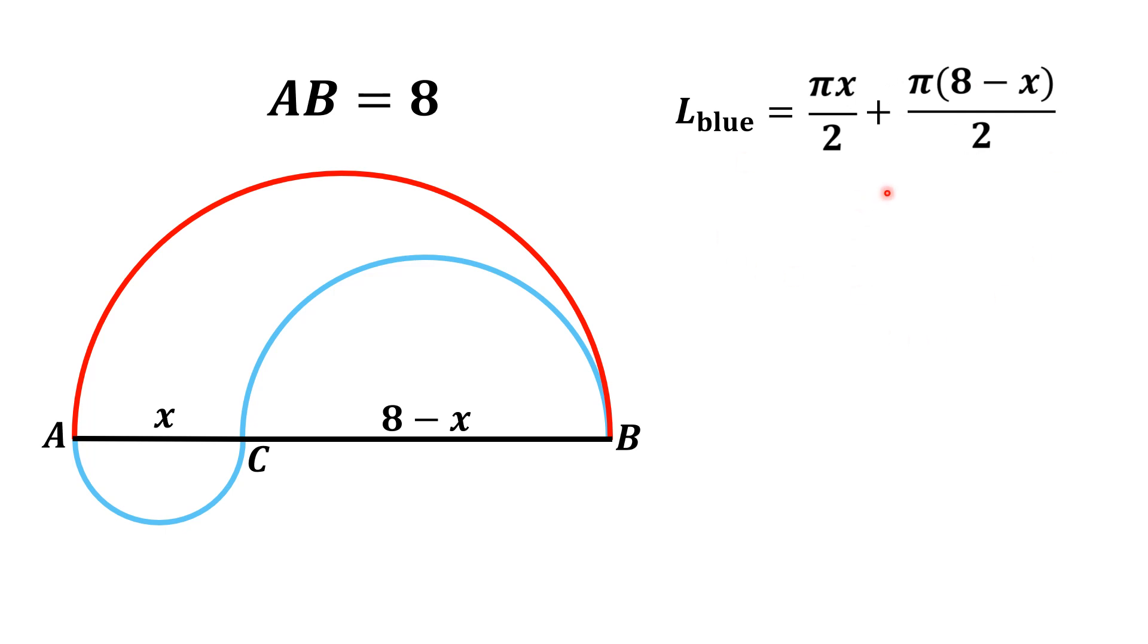If we simplify this, we get (πx + 8π - πx)/2. The πx terms cancel out, and finally, we have the length of the blue curve as 4π.